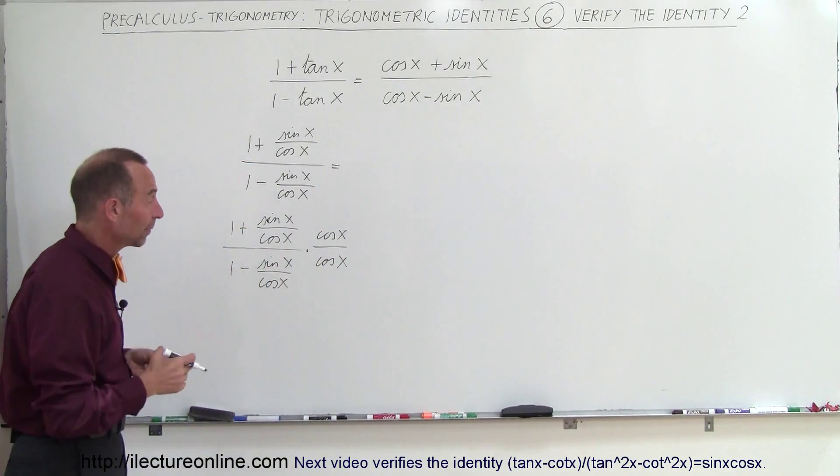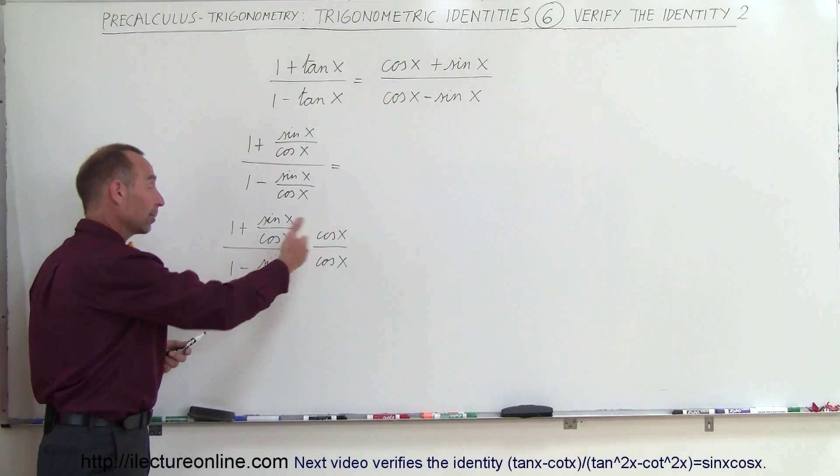Remember when we divide by the cosine divided by cosine, you're not changing anything. You're basically multiplying by 1.